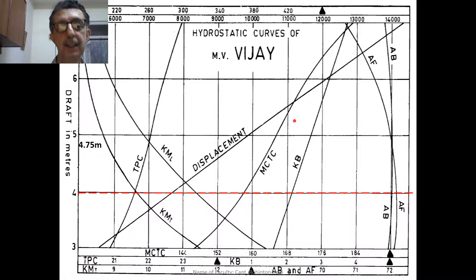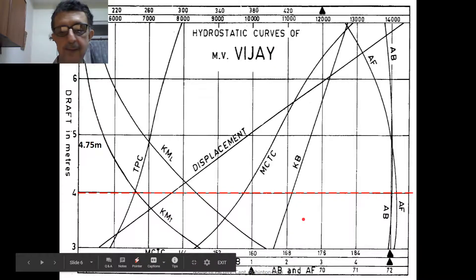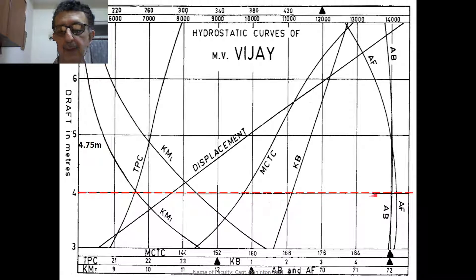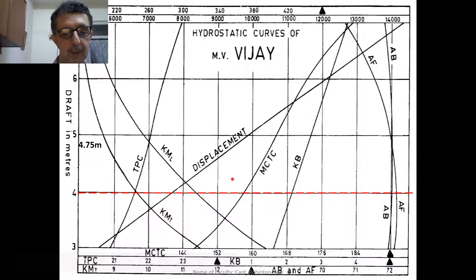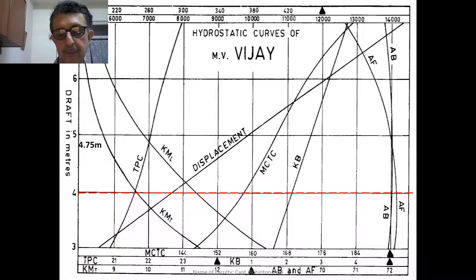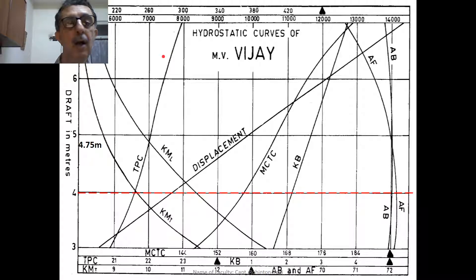Let us find the hydrostatic data for ship MUDJ at a draft of 4 meters. On the y-axis you have the draft in meters, and on the x-axis at the bottom you have MCTC — moment to change trim by 1 cm — TPC, KB, KM transverse, AB, and AF. AB is the center of buoyancy from the aft perpendicular, and AF is the center of flotation from the aft perpendicular. The top of the x-axis gives KM longitudinal and displacement.